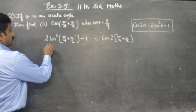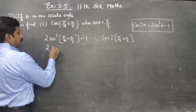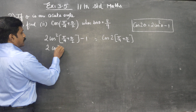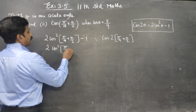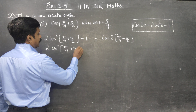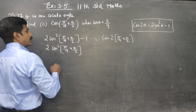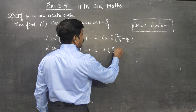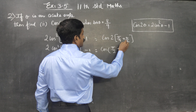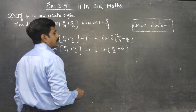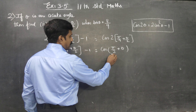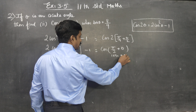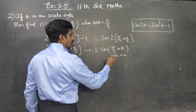Multiple angle formula: cos 2 theta is equal to 2 cos square theta minus 1. You have to be very appropriate in choosing the formulas. I know that cos 2 theta is equal to 2 cos square theta minus 1. This is my formula.